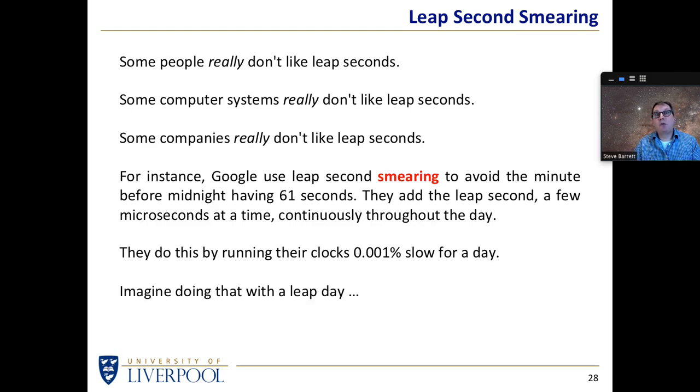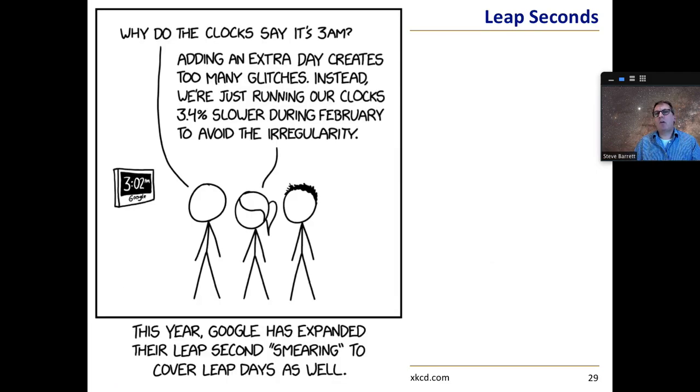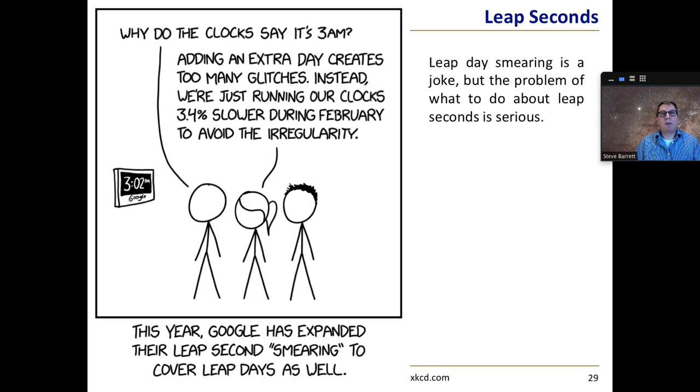Imagine if you tried to do that with a leap day rather than the leap second. Why do the clocks say it's 3am? Adding an extra day at the end of February creates too many glitches. Instead we're running our clocks three percent slow during February to avoid the irregularity. That's a joke that Google has expanded its idea of leap second smearing and applied it to leap days as well. Leap day smearing is just a joke but the problem of leap seconds is really serious.